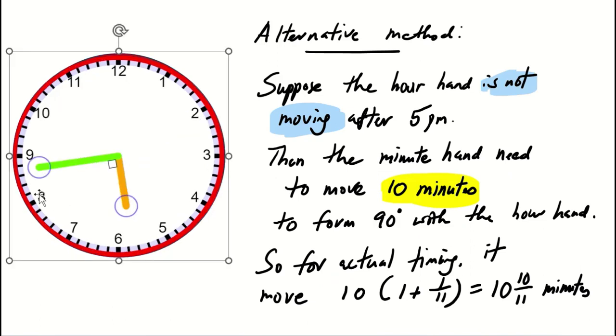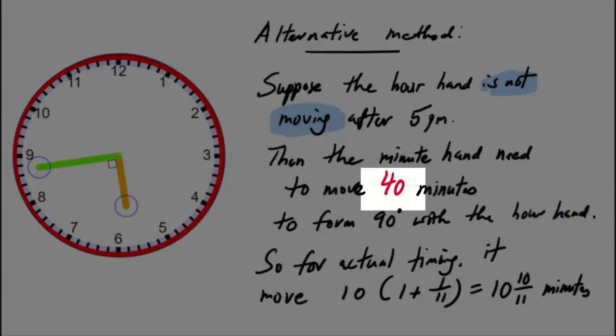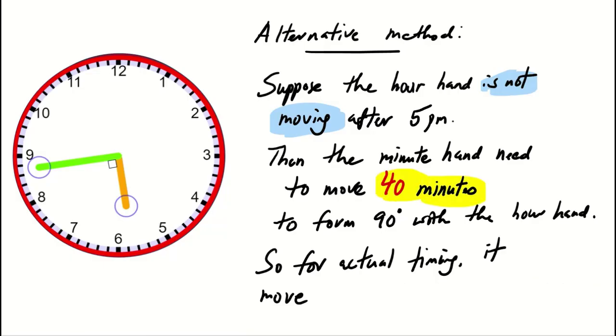Similarly, for the second 90-degree angle, if we assume the hour hand remains stationary, the minute hand would need to move 40 minutes. This leads us to the actual timing of 40 × (1 + 1/11), resulting in 43 and 7/11 minutes.